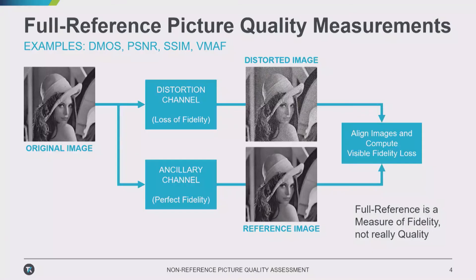For example, what if my distorted image is actually better than the original? That might actually have a low objective score, because it's different — different in a good way — but that's why it's more of a measure of fidelity than quality.